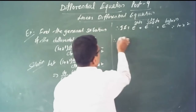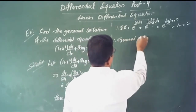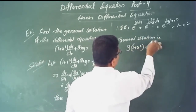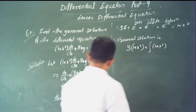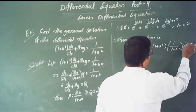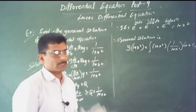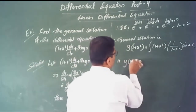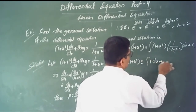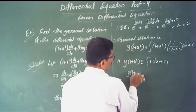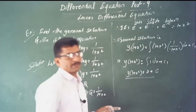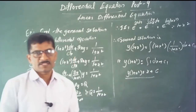Write the general solution: y times (1 plus x squared) equals the integral of (1 plus x squared) times q, where q is 1/(1 plus x squared), dx plus constant. The (1 plus x squared) terms cancel, giving the integral of 1 dx. Therefore, y times (1 plus x squared) equals x plus constant. This is the general solution.